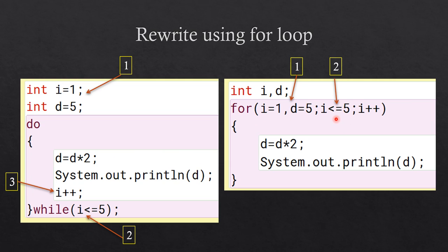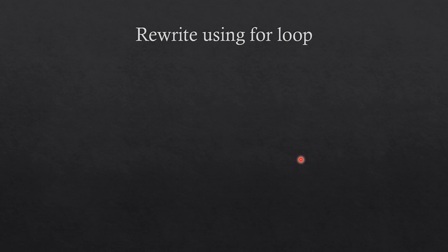After the test condition, put i plus plus as the updation statement after a semicolon. Then write the body of the loop as it is — the two lines other than i plus plus are written as they are. This is how you convert a do-while loop to a for loop.